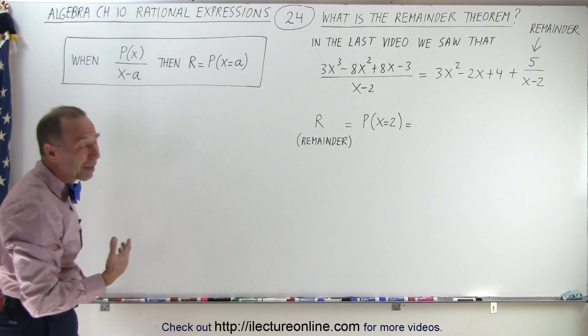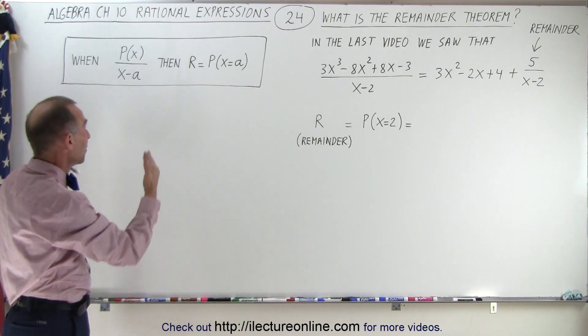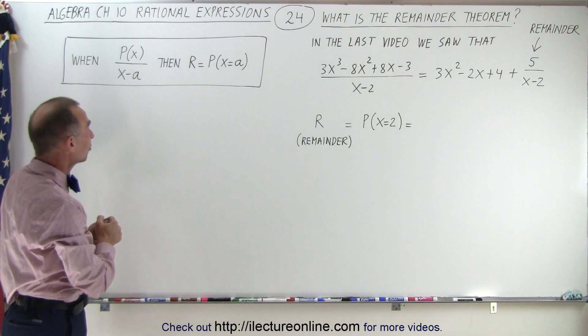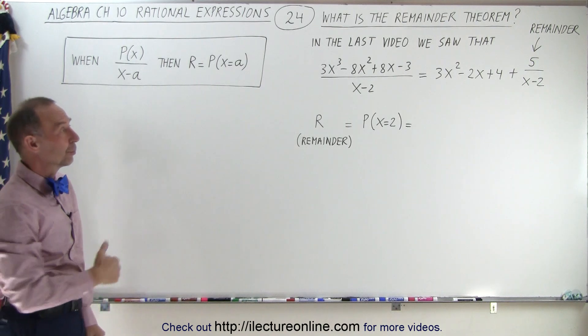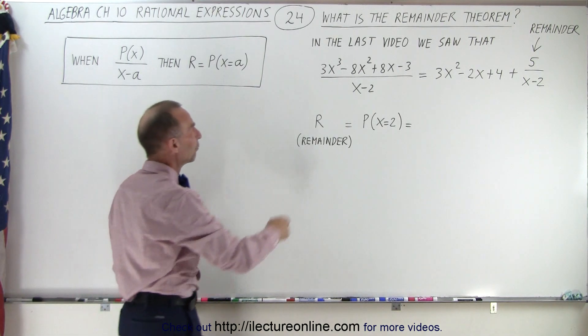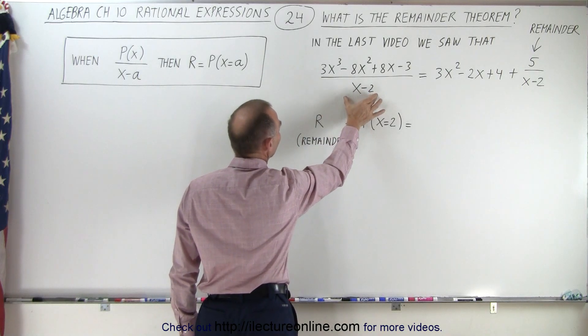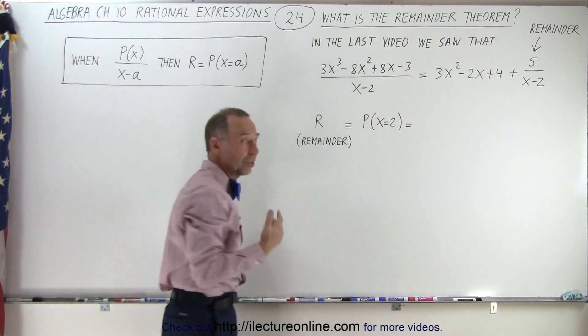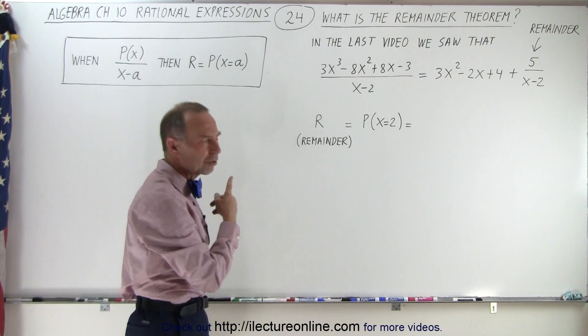So let's try to make some sense out of that statement. That may make sense to a mathematician, but doesn't make sense to us. Well, here we have a nice example to show you how that works. Let's say we have one polynomial divided by x minus some constant. In this case, the constant is 2. That looks familiar.